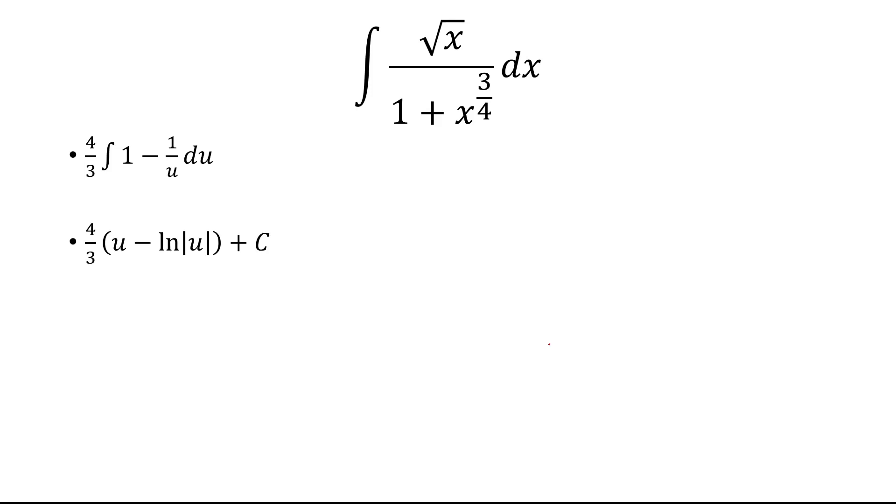We get u minus the natural log of the absolute value of u plus C. Replace u with 1 plus x to the 3/4, and then finally distribute the 4/3 to get this as our final answer.